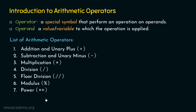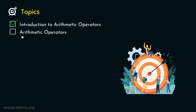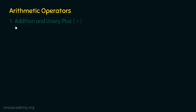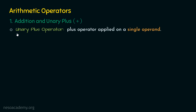These are all the arithmetic operators we need to understand. Let's move on to the next topic: arithmetic operators. The first operator is addition and unary plus, both denoted by the plus sign. The unary plus operator is an operator applied on a single operand — that is why it is called unary. Unary stands for a single operand.